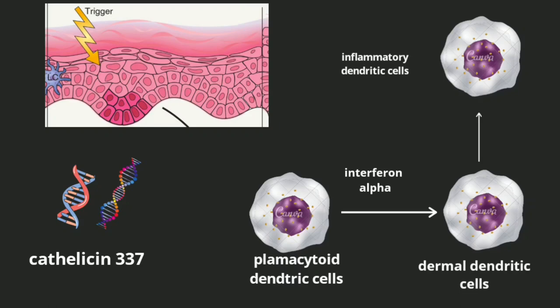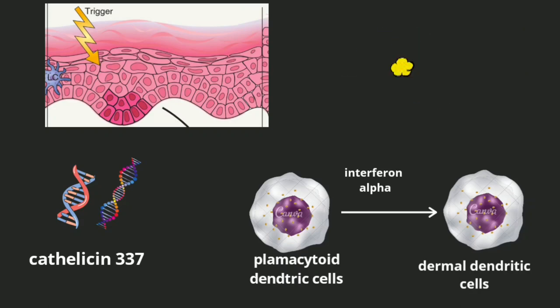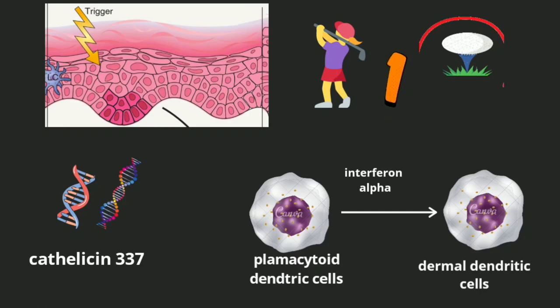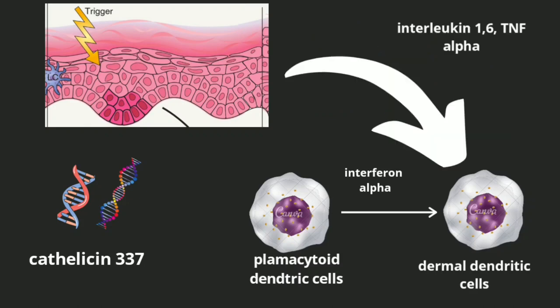It's important to note that antimicrobial peptides are found in the epidermis while all of these dendritic cells are present in the dermis. When keratinocytes sense this, they start producing cytokines. A mnemonic to remember: from 'golf tees' you can remember TNF-alpha, and from 'sixes' you can remember interleukin-6. So interleukin-1β, TNF-alpha, and interleukin-6 are the cytokines secreted by the keratinocytes, and these also affect the dermal dendritic cells.